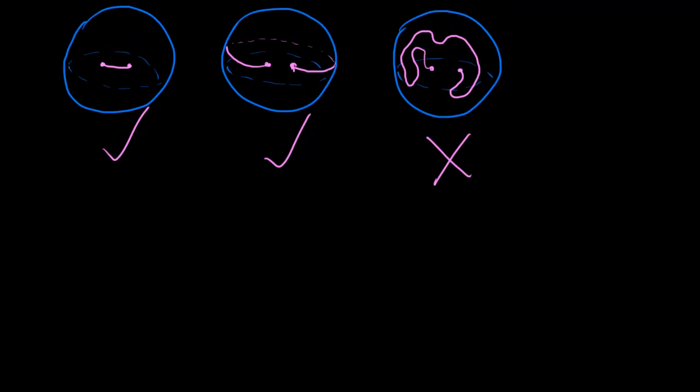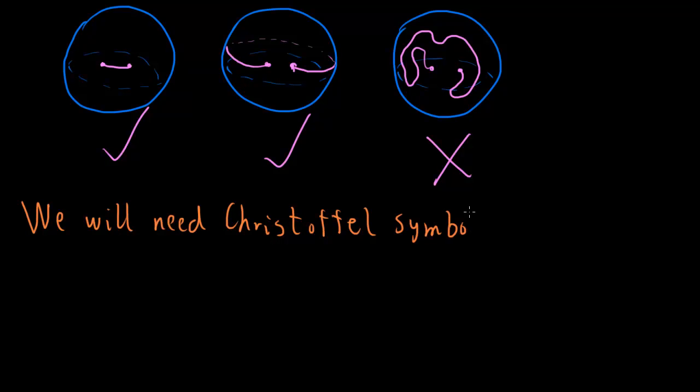So in order to understand what a geodesic is mathematically, and to be able to compute those, we'll need to define this very obscure, ugly-looking object called the Christoffel symbol. So we will need Christoffel symbols, and this is why we discussed this metric and Greek indices and things like that in the last video. So the definition, I'm just going to write it and make no apologies, so we use this capital Greek letter gamma sigma mu nu, so this is an object which has three indices.